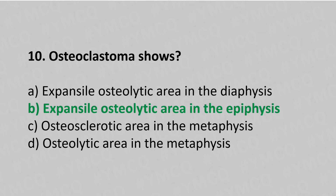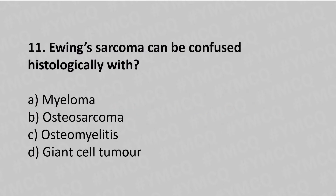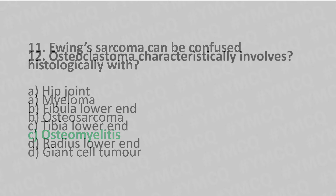Now let's move to question number 11. Ewing sarcoma can be confused histologically with — option A: myeloma, option B: osteosarcoma, option C: osteomyelitis, option D: giant cell tumor. The answer is option C: osteomyelitis.